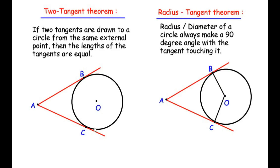I have drawn a circle with center O where A is an external point through which two tangents AB and AC are drawn. According to this theorem, if the length of AB is 10 centimeters, then the length of AC also becomes 10 centimeters — that is, tangents drawn from the same external point are equal in length.